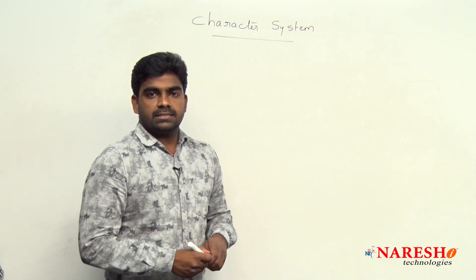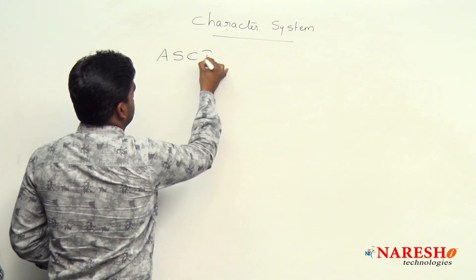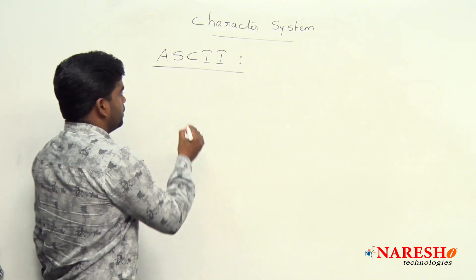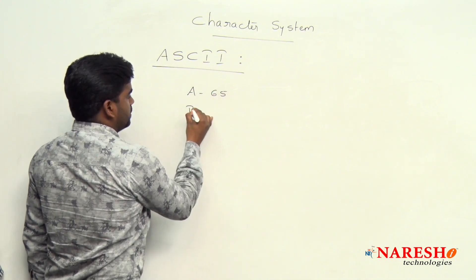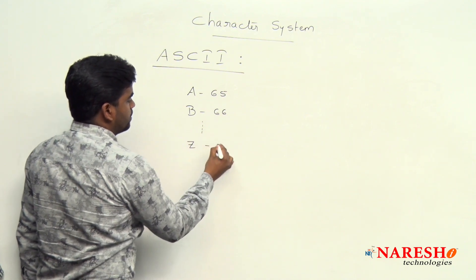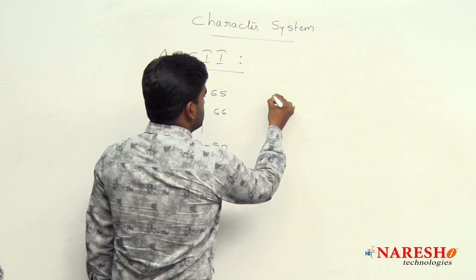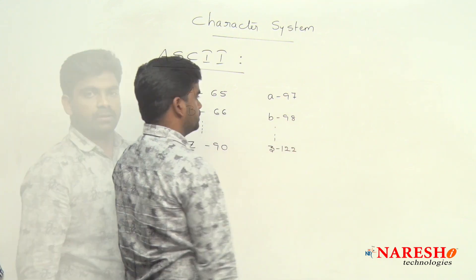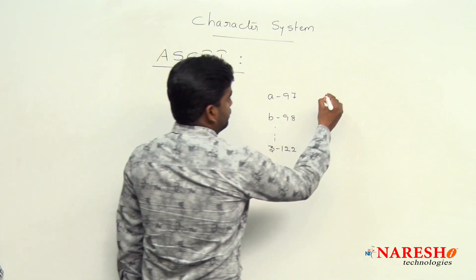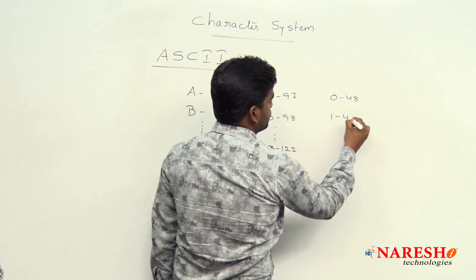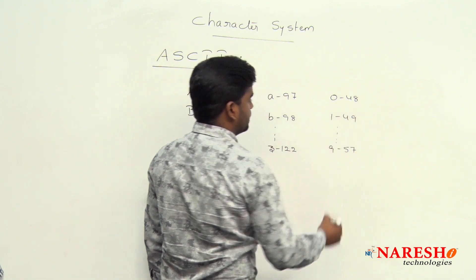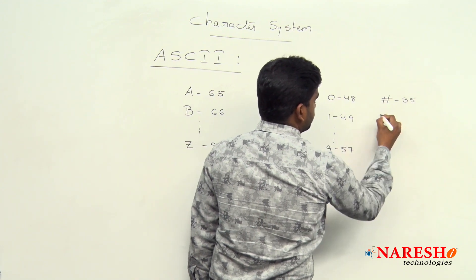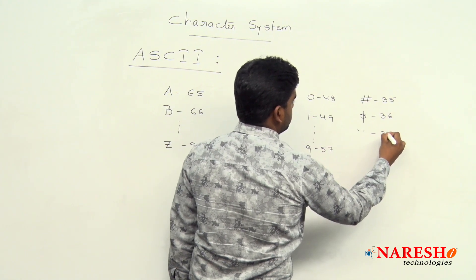One example of character systems is ASCII, Americans Standard Code for Information Interchange. For capital A, they have given a fixed value of 65; capital B is 66 and so on; capital Z value is 90. If it is small a, value is 97; small b is 98 and so on; small z is 122. For digits, 0 has value 48; 1 is 49 and so on; 9 is 57. Even for special symbols — hash is 35, dollar is 36, space is 32 and so on.